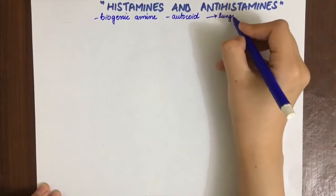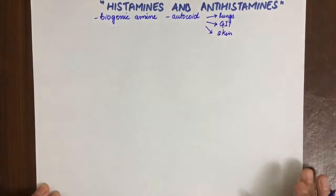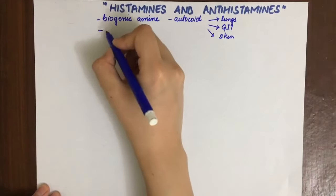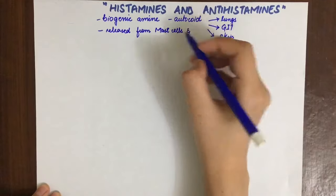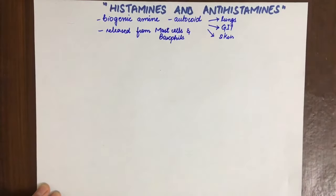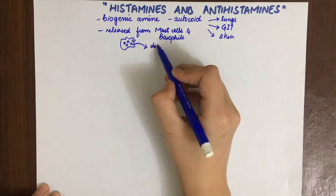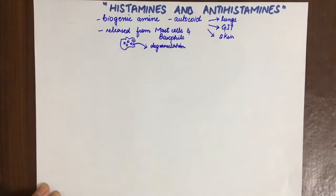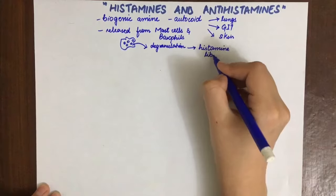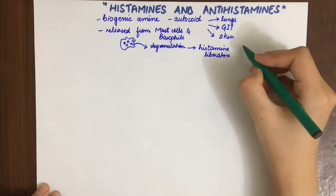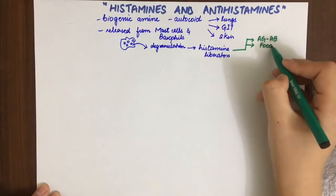Histamine is mainly present in the lungs, GIT, skin, placenta, and liver. It is released mainly from mast cells and basophils in response to histamine liberators, which include antigen-antibody reactions, foods that some people are allergic to, bile salts, drugs such as morphine, d-tubocurarine, dextran, and hydralazine, as well as venom and trauma.